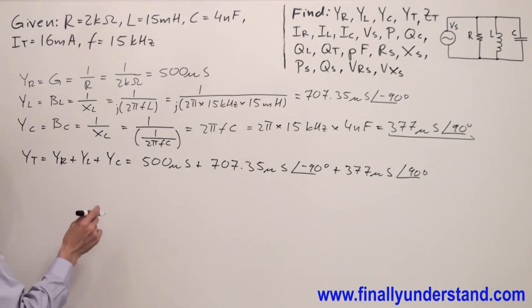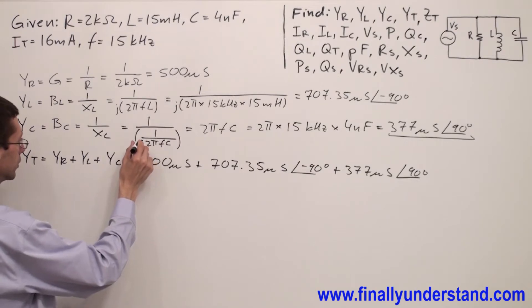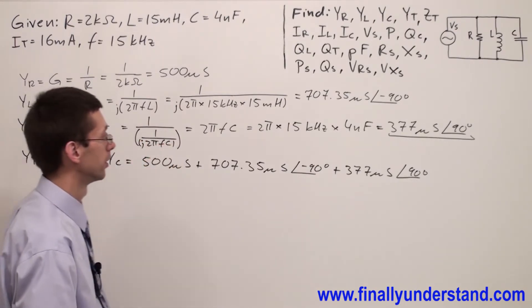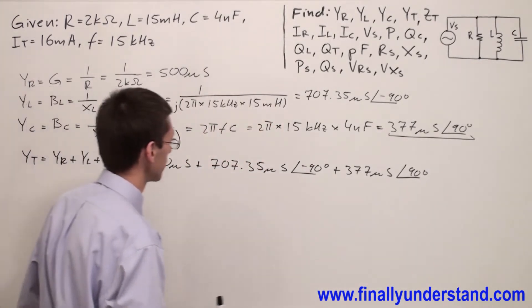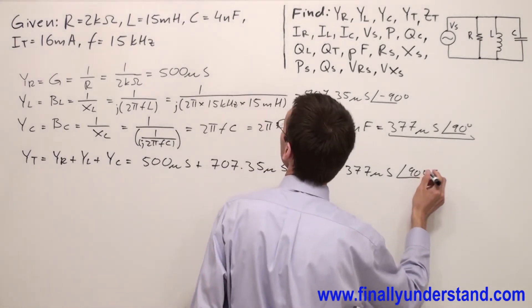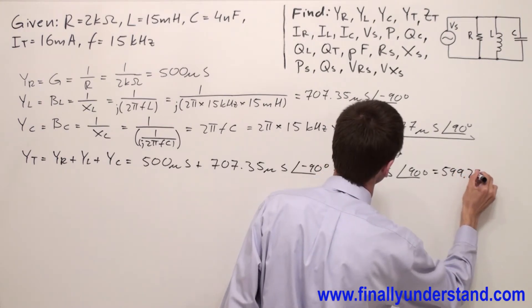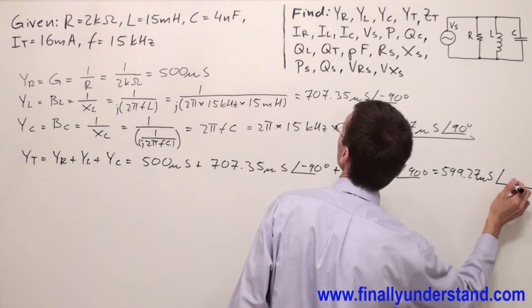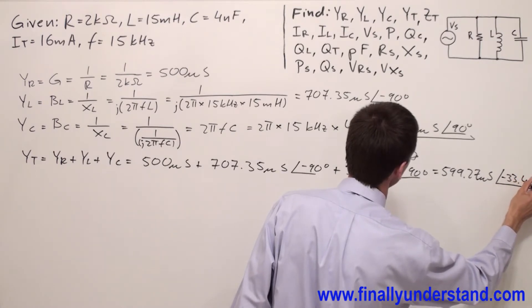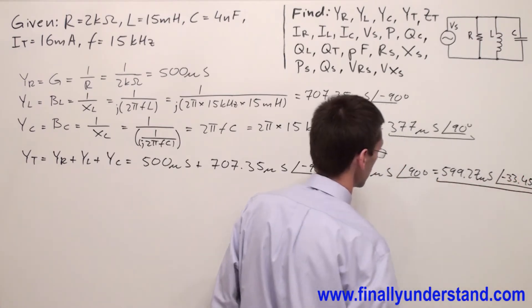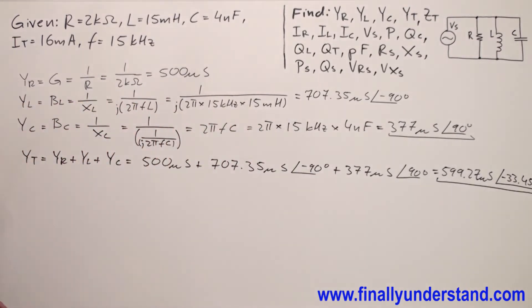Don't forget that anytime we talk about the capacitive reactance we're supposed to add j to the denominator, that's why we are going to have angle of 90 degrees. So this is equal 599.27 microsiemens and angle of negative 33.45 degrees. This is the total admittance of my circuit.